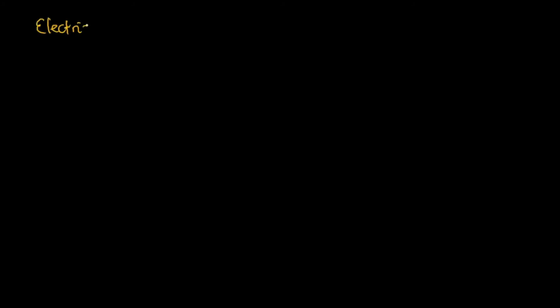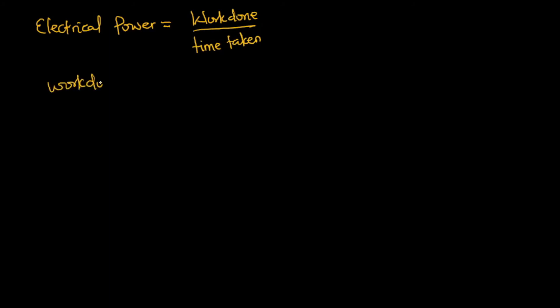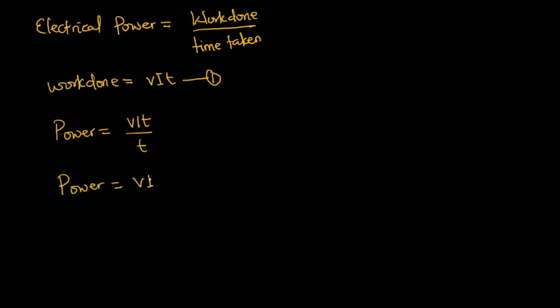Now let's look at what electrical power is. Electrical power can simply be defined as the work done per second. So power equals work done over time taken: P = W/t. Since the work done W = VIt, substituting into the power formula gives P = VIt/t, and the two t's cancel to give P = VI.